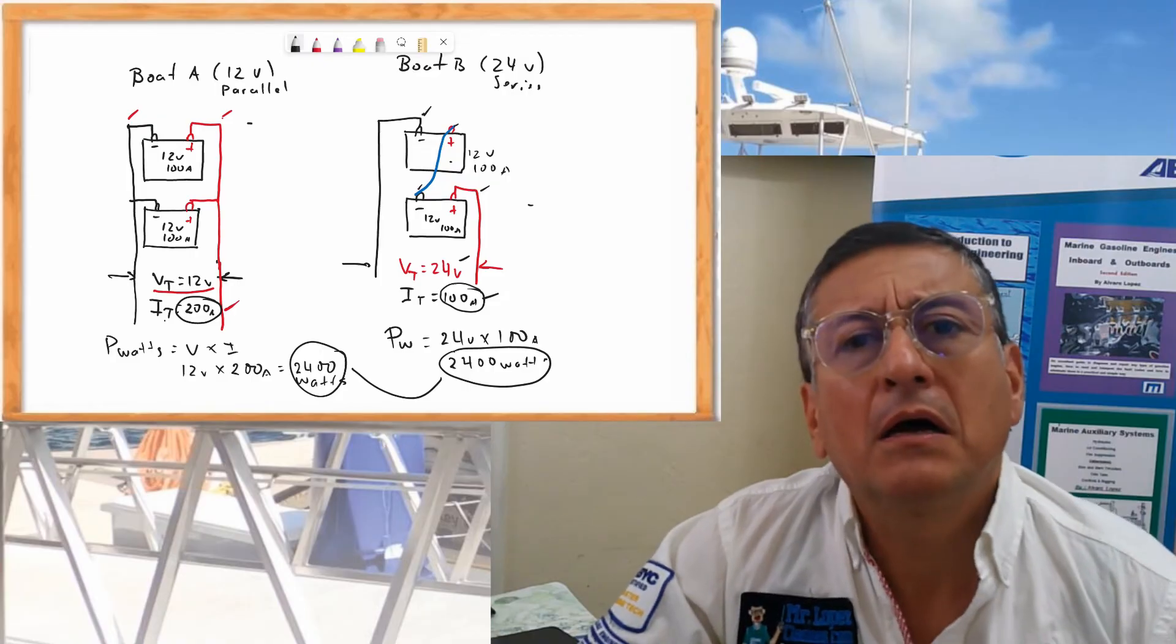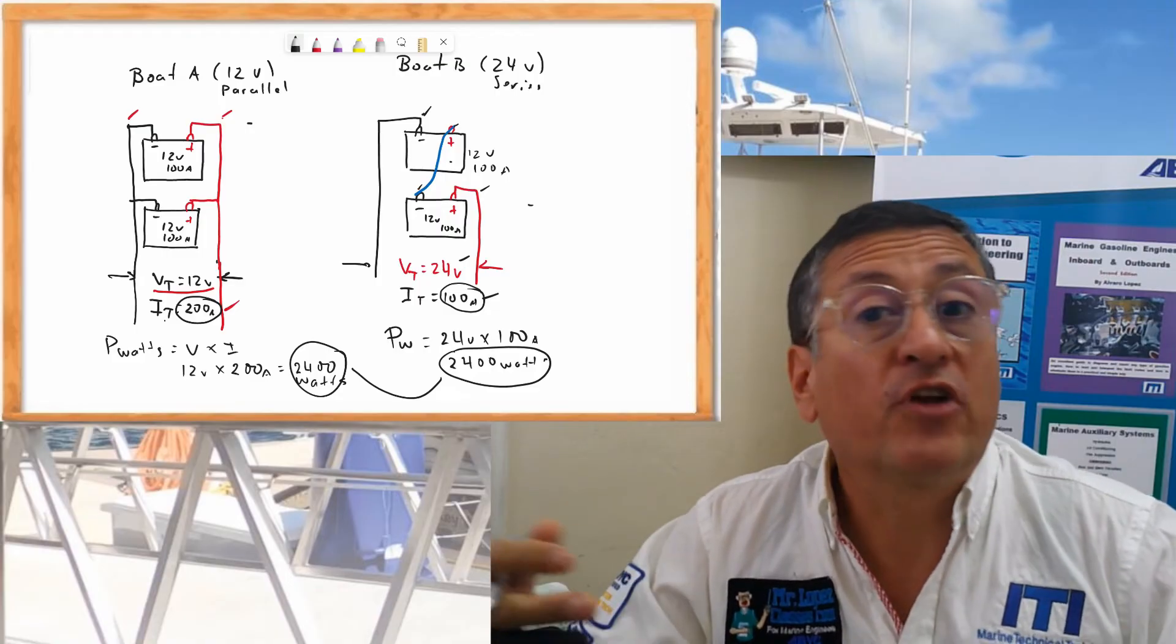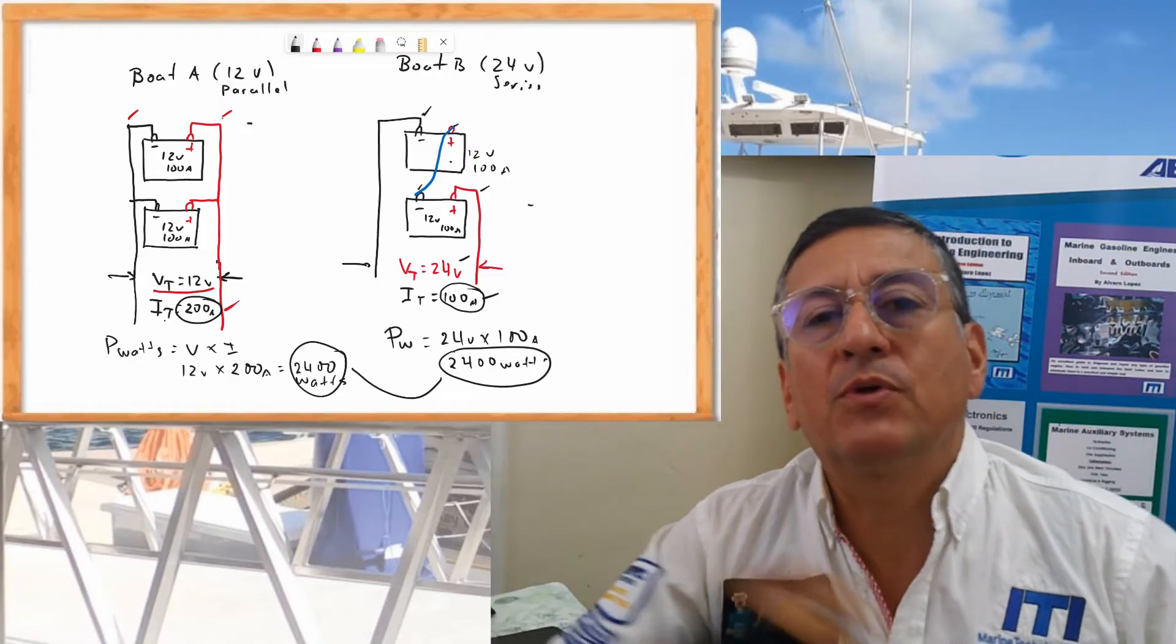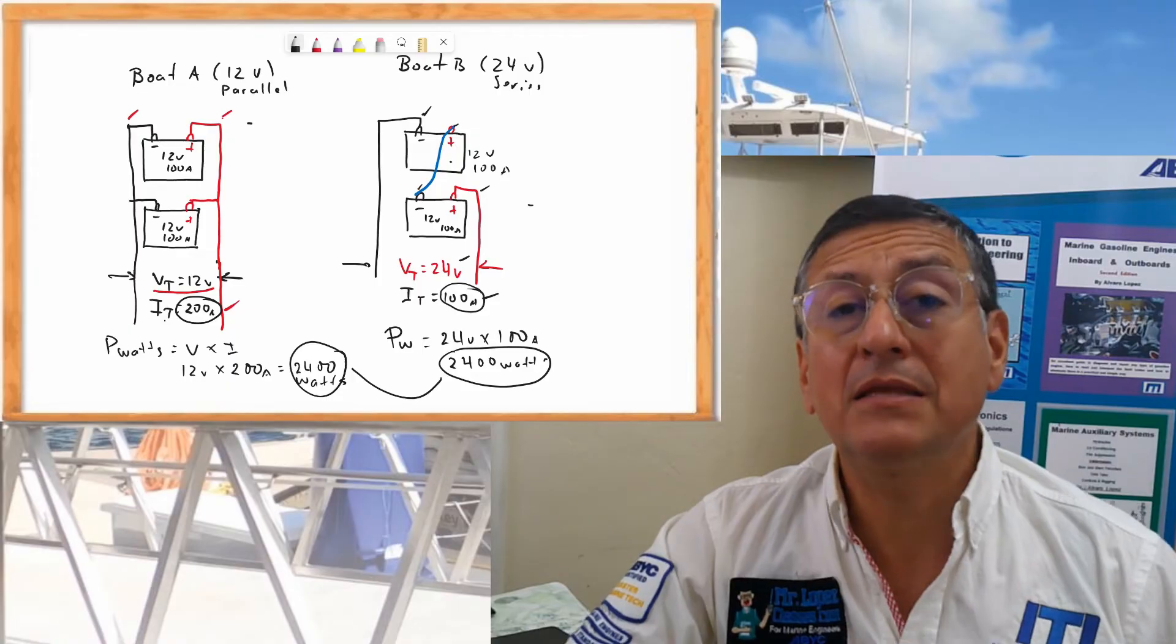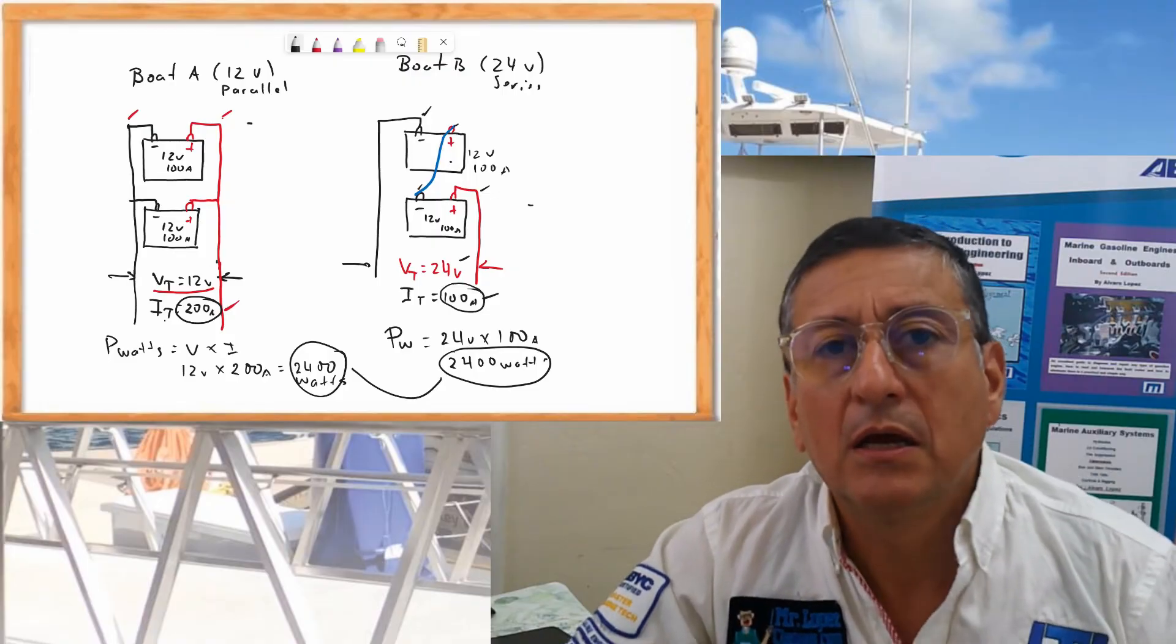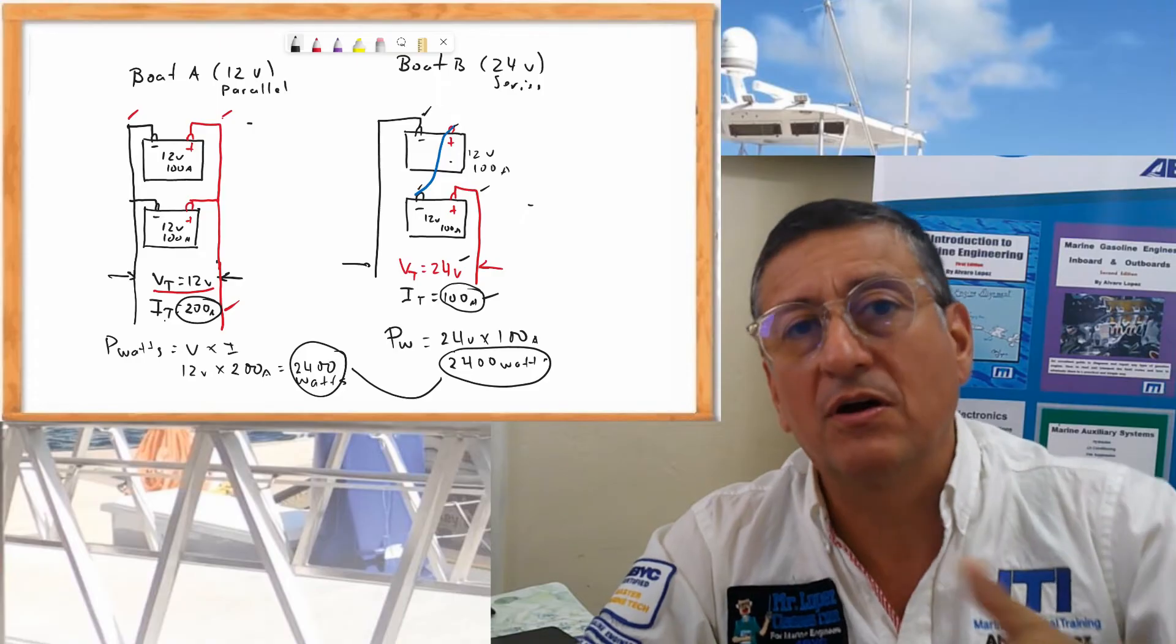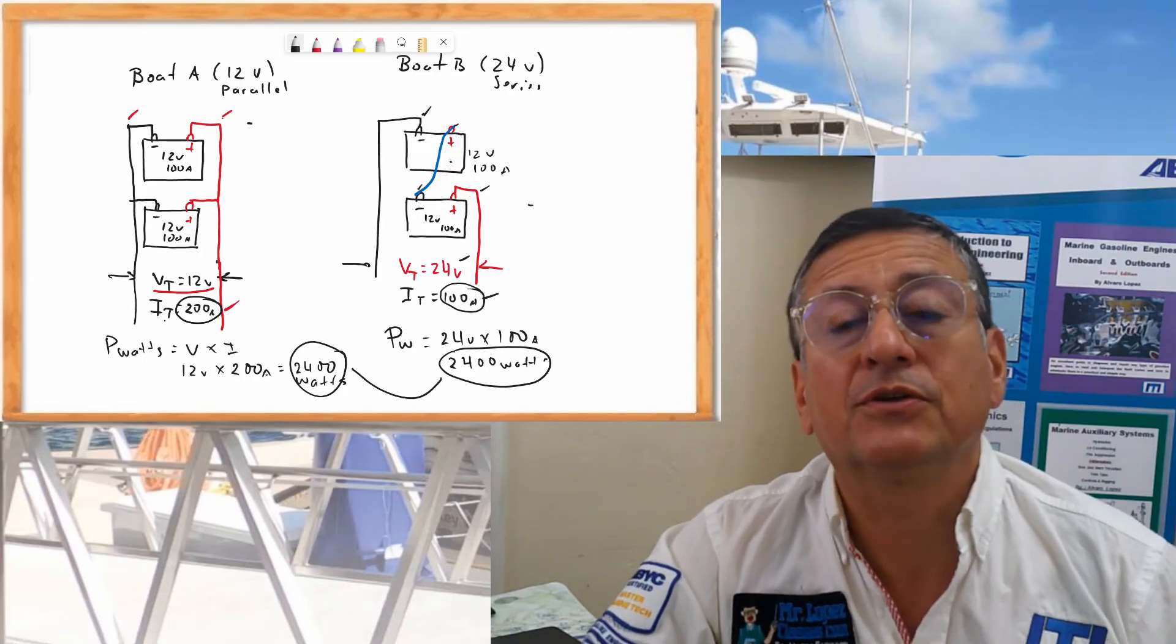In what cases I use a parallel configuration? When I need a jump of voltage at the beginning, high voltage at the beginning. That's the series connection. This is the recommendation.